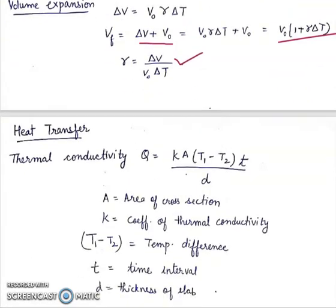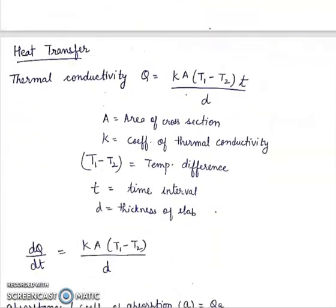Next is heat transfer. Thermal conductivity: Q is equal to K A times T1 minus T2 times t upon D. A is area of cross section, K is coefficient of thermal conductivity, T1 minus T2 is temperature difference, small t is time interval, and D is thickness of slab. So the rate of heat transfer dQ by dt will be K A times T1 minus T2 upon D.